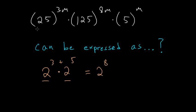But in our case, we don't have the same base. But what you can notice is that 25 is really just 5 squared, and 125 is 5 to the 3rd power.